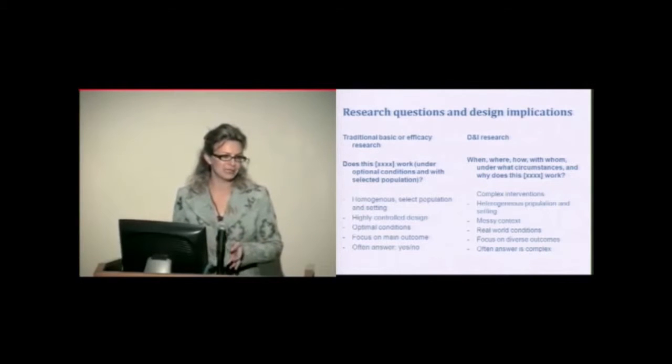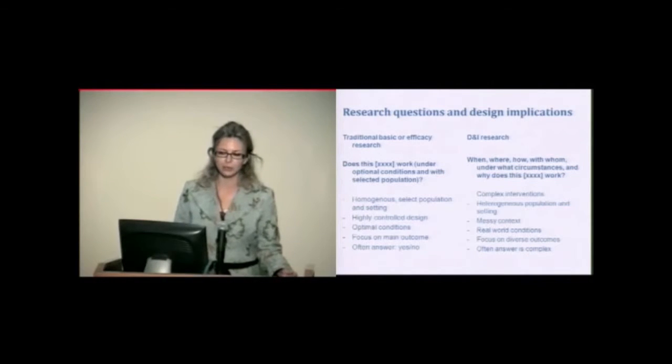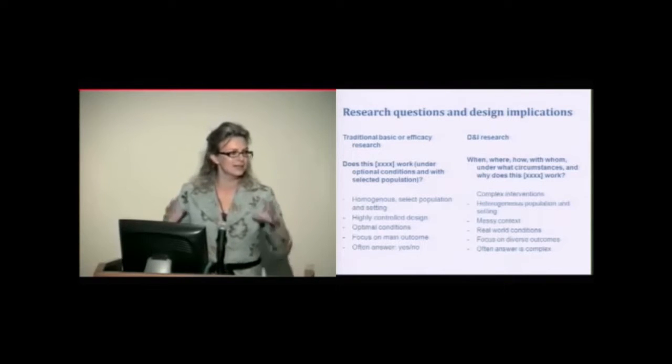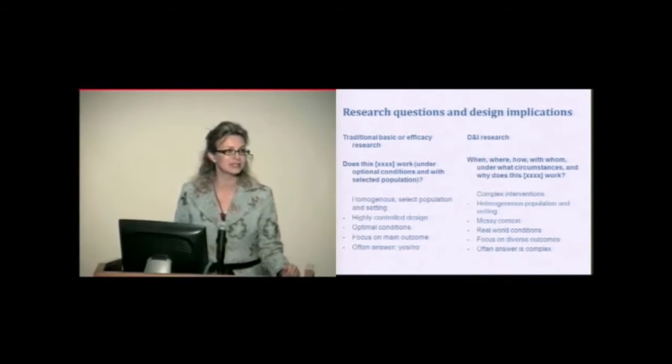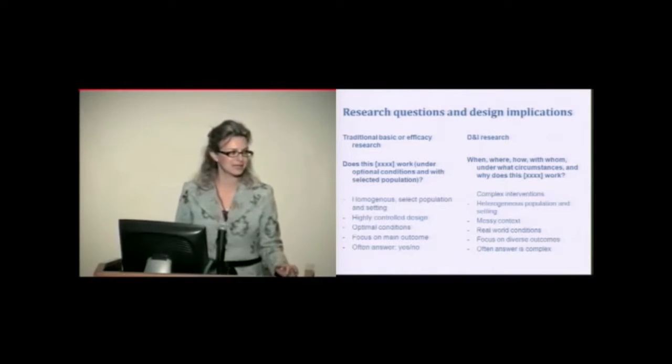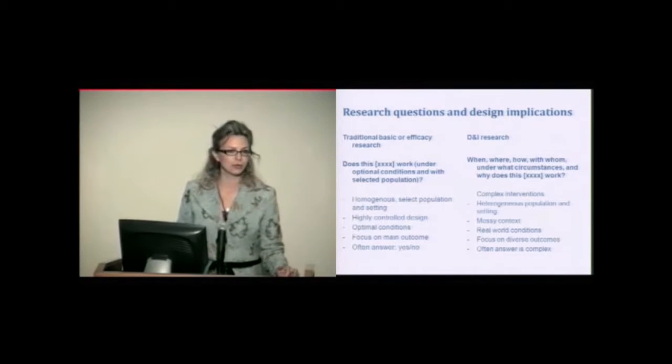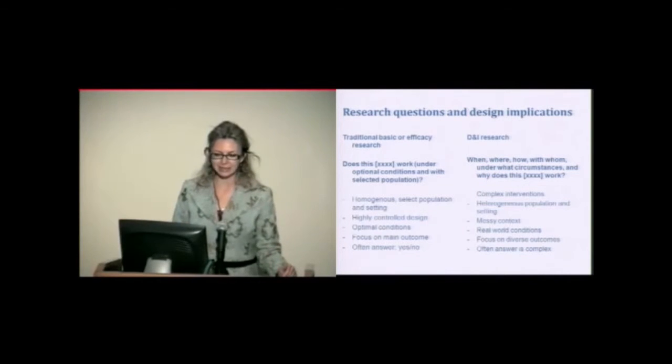When we move into the dissemination and implementation research area, our research question becomes a little bit longer. The question is more when, where, how, with whom, under what circumstances and why does this thing work? And to be able to answer that question, our study design choices are going to be different. We are going to think usually of complex interventions with heterogeneous populations and settings. The context is going to be messy. And we are not going to try to control for the context, but rather try to account for it. So rather than getting it out of the picture, trying to understand it and measure it. And we are going to focus on diverse outcomes that are able to answer this very question. Finally, the answer will be obviously more complex.